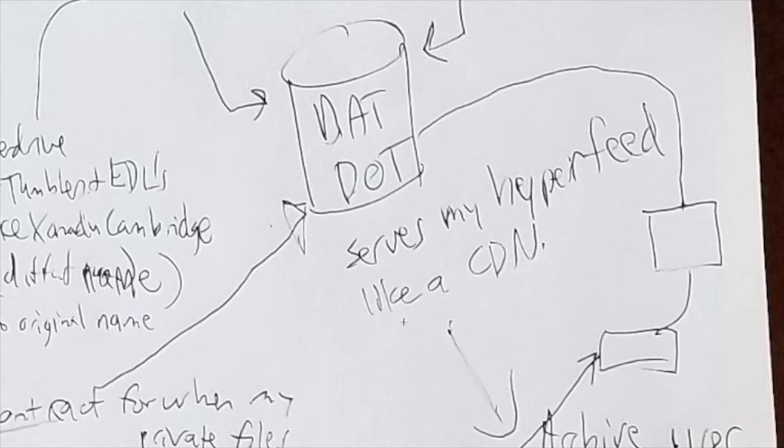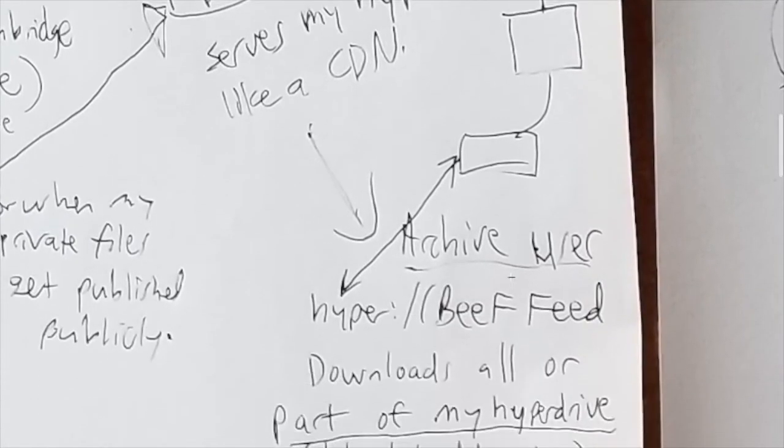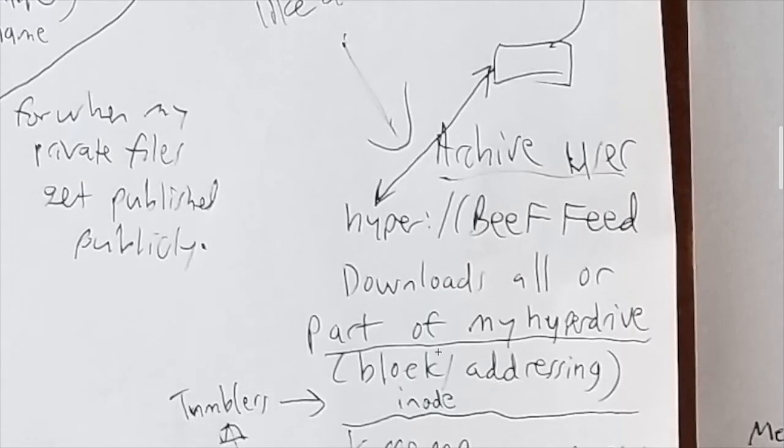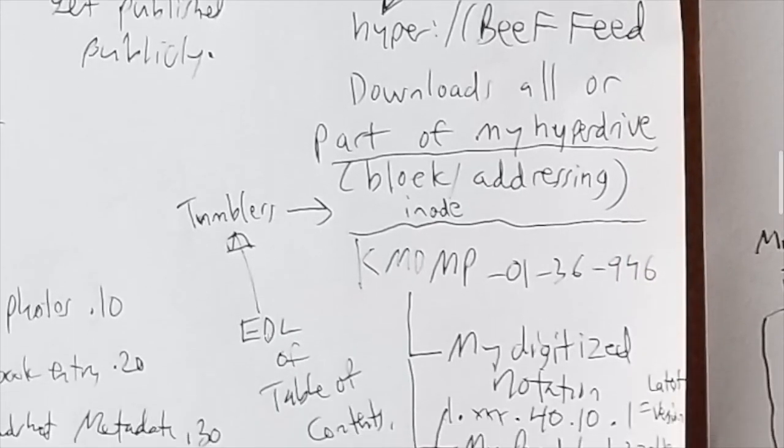So DATDOT would serve my hyperfeed as a CDN. So when a user would connect to my feed, it's the same address, they could download all or part of my hyperdrive, and if we have the block addressing and inode maps in there, then it is possible to calculate the segments of the hypercore that would be needed. So essentially the tumblers, they would first download a table of contents, which is an EDL, edit decision list. And that, they would be able to know which tumblers need to be retrieved. And that mapping of the tumblers to the inodes or whatever physical storage is built would allow them to get what they want.